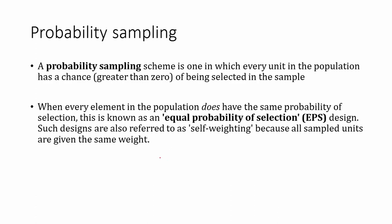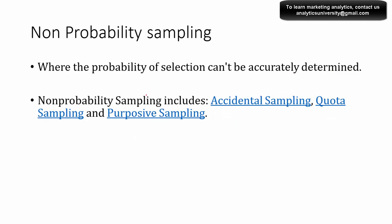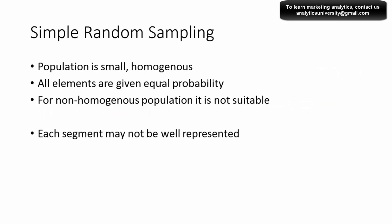Probability sampling is a type of sampling where every unit in the population has a chance of getting selected in the sample. When each unit has an equal probability of being selected, it's called equal probability of selection, or EPS sampling. Non-probability sampling is where you cannot accurately compute the probability of selection. Simple random sampling is a probability sampling where each and every element in the population has equal probability of being selected — that's why it's called simple random sampling.